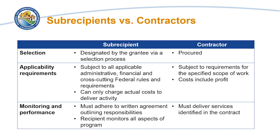What is the difference between subrecipients and contractors? Subrecipients are designated by the grantee via a selection process. They are subject to all applicable administrative, financial, and cross-cutting federal rules and requirements. They can only charge actual costs to deliver the activity, must adhere to the written agreement which outlines their responsibilities, and the recipient monitors all aspects of the program.